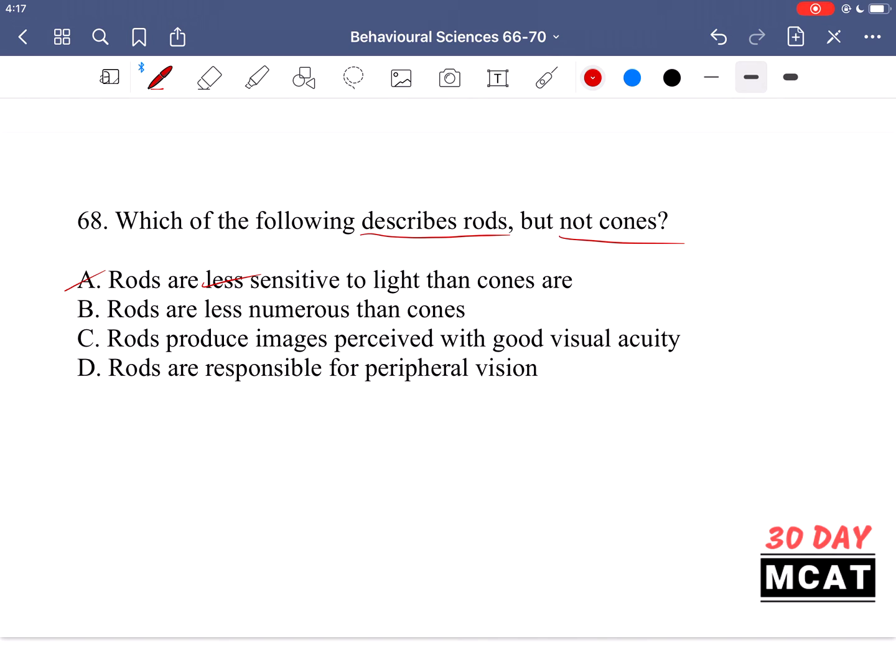And you're mainly using your rods to view things at night. And that's why things can appear black and white because rods don't visualize color. Whereas cones are responsible for color. So rods are more sensitive. B is saying rods are less numerous than cones. No, there are more rods in the eye than cones.